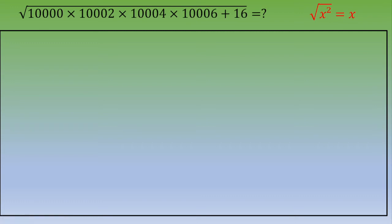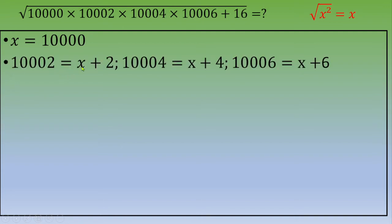So let's do that. We set x = 10,000. Now we express the other three terms as functions of x: 10,002 is x + 2, 10,004 is x + 4, and 10,006 is x + 6.